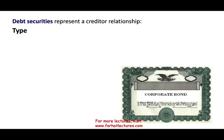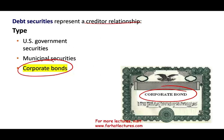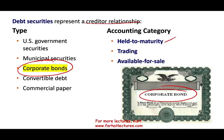When we say debt securities, think of corporate bonds — it represents a creditor's relationship. When you invest, you are lending your money. We could have U.S. government securities, municipal securities, corporate bonds, convertible debt, and commercial paper, which is basically short-term debt. The reason we discuss corporate bonds is that in intermediate accounting we learn about bonds, so if you know how to account for bonds, the others are pretty straightforward. The accounting categories for debt securities are: held to maturity, trading, or available for sale.